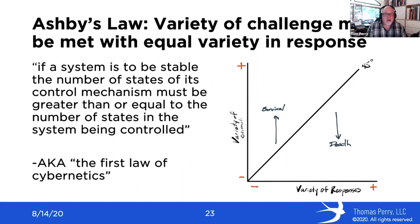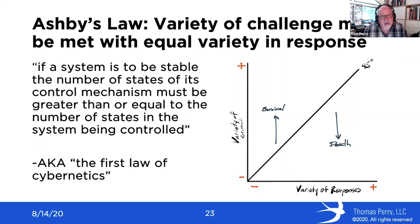What we need to be doing is responding faster than the challenges that are coming at us. This is related to a law of cybernetics called Ashby's Law: the variety of challenge must be met with equal variety in response. Our business environment is going to throw a variety of challenges at us, and we need to have an equal or greater number of responses. That is required in order to survive in the business market. If the market throws more challenges than we can provide responses, we will not survive as a business.